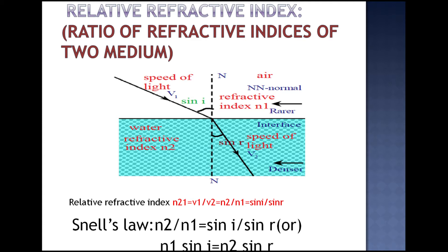Let V1 and V2 be the speeds of light in the first and second medium respectively. V1 is the speed of light in the first medium, and V2 is the speed of light in the second medium.